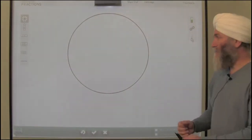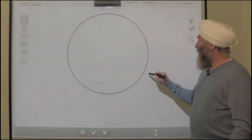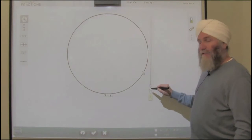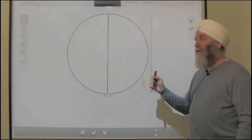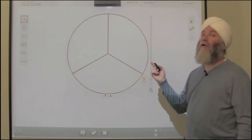Let's take a look at the model and see how it works. So here's a circle kind of like the cookie and we can divide it into equal parts. If we divide it into two equal parts we call those halves. If we divide it into three equal parts they're called thirds.